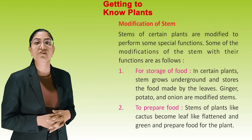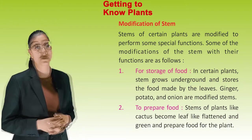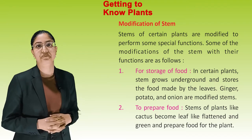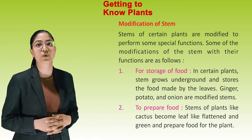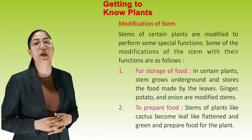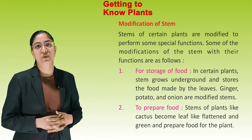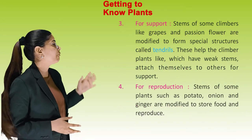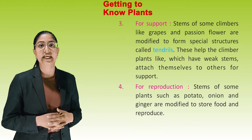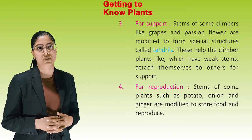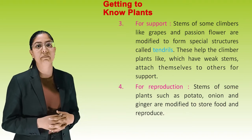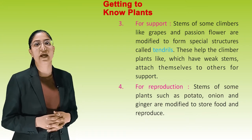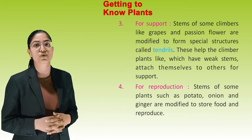Modification of Stem: Stems of certain plants are modified for special functions. For storage of food — in plants like ginger, potato and onion, stems grow underground and store food. To prepare food — stems of cactus become leaf-like, flattened and green to prepare food. For support — stems of climbers like grapes and passion flower are modified into tendrils that help the plant attach to other objects. For reproduction — stems of potato, onion and ginger are modified to store food and also reproduce.